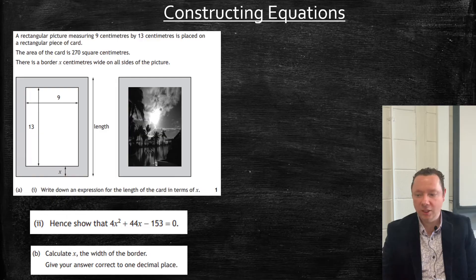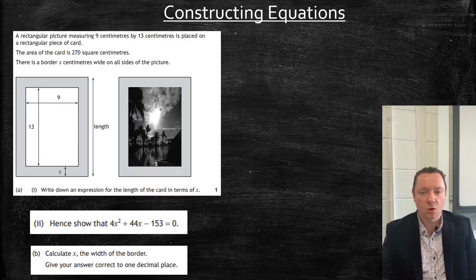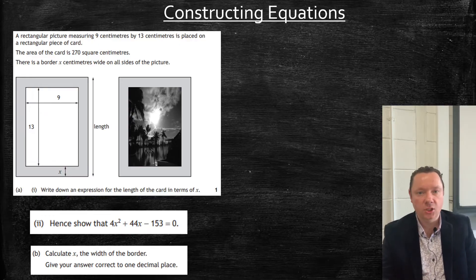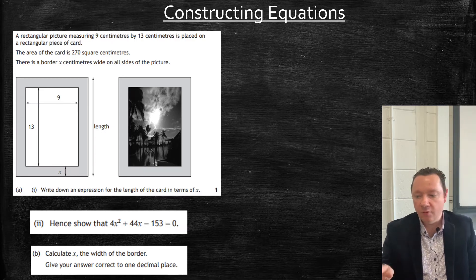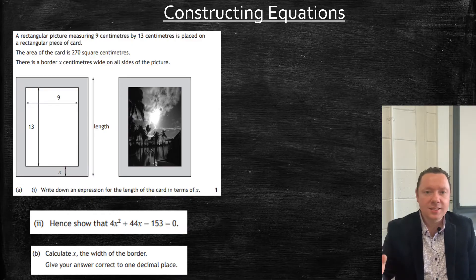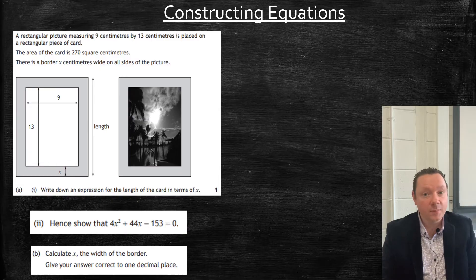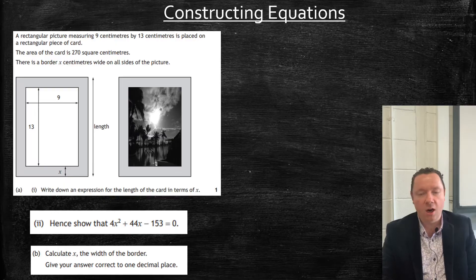The hardest types of questions are where you have to construct your own equation and then use it to solve. These often appear at the end of a paper, usually the calculator paper. Don't worry if you can't do the first part — they'll often give you the equation for the last part. So: a rectangular picture measuring 9 by 13 is placed on a rectangular piece of card. The area of the card is 270 and there's a border of x all the way round. Part A: write down an expression for the length of the card in terms of x.